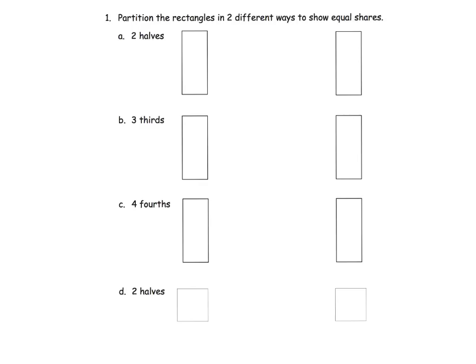This is our homework, and this is where we actually start to practice what we're talking about. The directions say: partition the rectangles in two different ways. So we want to show two halves, done in two different ways. Here we might cut it this way, and here we might cut it this way — two different ways to show two halves. If we want to show three thirds, one way might be to cut it like that, and another way might be to cut it like that — two different ways to cut thirds.